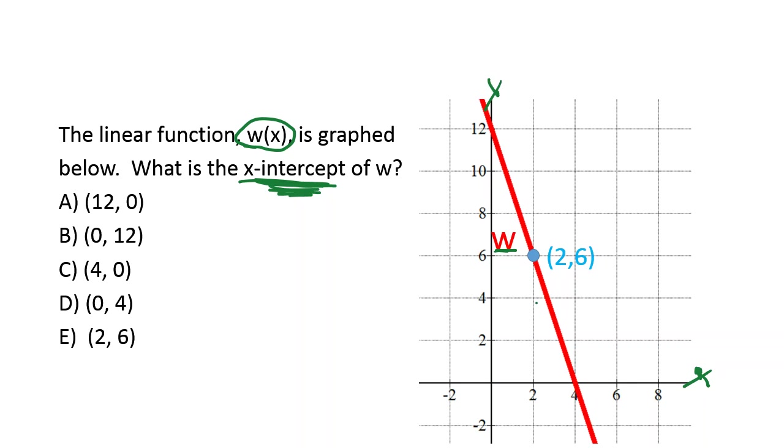So we want to know where line w crosses the x-axis. And it crosses the x-axis right here at this point. It's the point 4 because the x-value is 4, 0 because your y-value is 0.